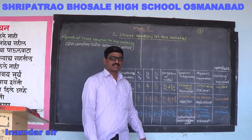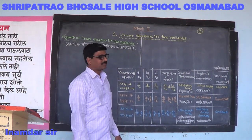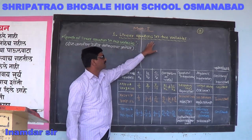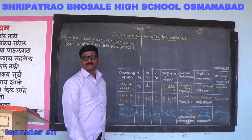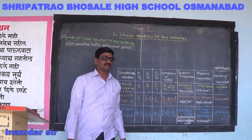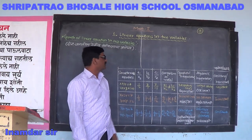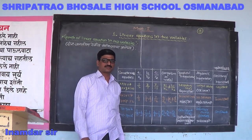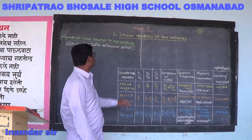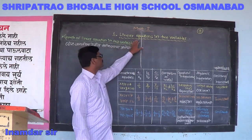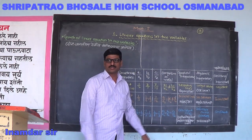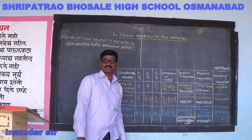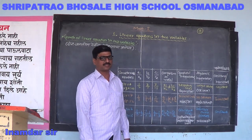Hello students. Last period we have seen in Math 1 — first, linear equations in two variables. In that we studied the different types of methods of solutions to find the linear equation in two variables. Two methods we have seen, namely elimination and second is substitution method.